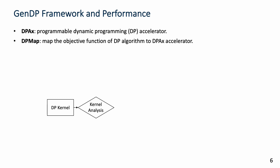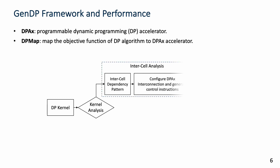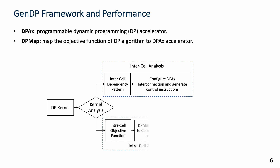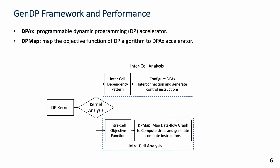When we have a new DP kernel, we first analyze its intercell dependency pattern, configure the hardware, and generate control instructions. Then we analyze the intracell objective function, using the DPMAP algorithm to generate the compute instructions. Finally, we perform the DP kernel on the DPACS accelerator.